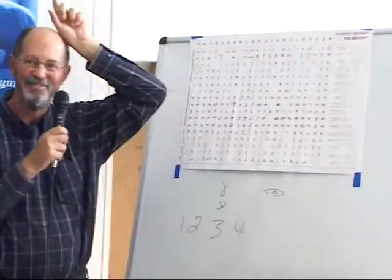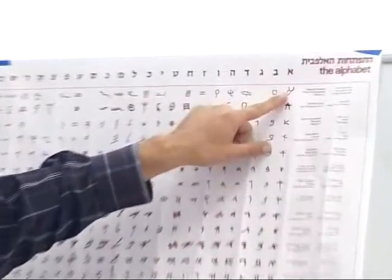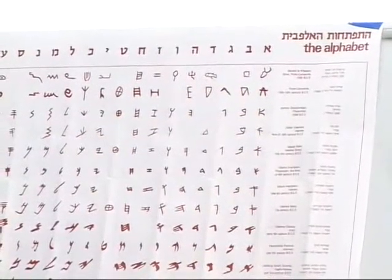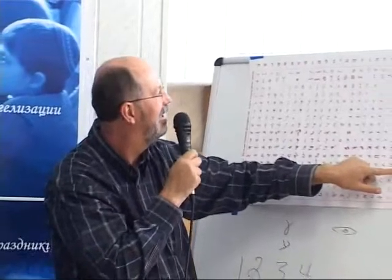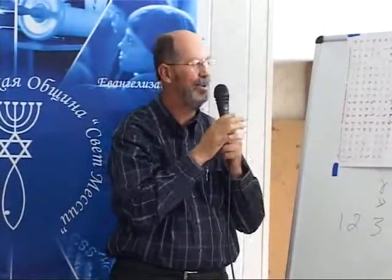We have the antlers — the horns on an animal here — for what ends up being the letter Aleph. Isn't that something? Everything has a reason, and it goes way back.